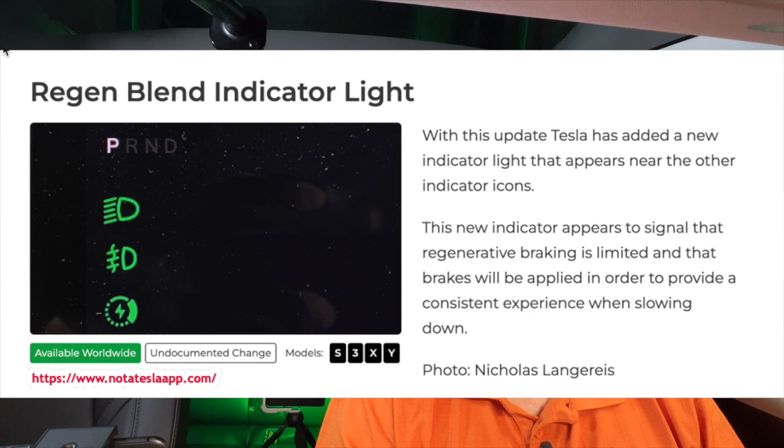With this update Tesla has also added a new indicator light that appears near the other indicators on the left-hand side. This new indicator signals that regenerative braking is limited and that brakes will be applied to provide a consistent slowing experience. That icon shows up when your battery is topped up above about 90 percent, or when it's cold and regen is limited. Quite a few people have updated and seen that icon without knowing what it was for — now you know.